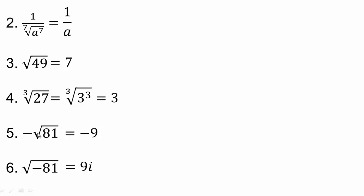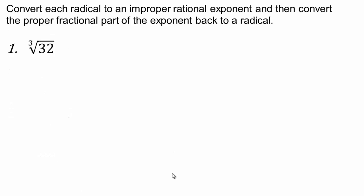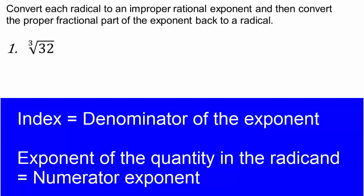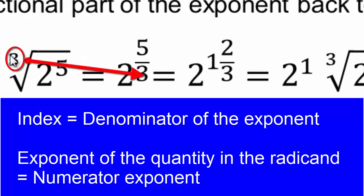So we have a way to simplify roots and cube roots. Remember, if you have a negative inside a root, you're going to end up with an i. Alright, convert each radical to an improper rational exponent, and then convert proper fractional part back to radical. So the first one would look like this. So you have cube root of two to the fifth, or two to the power five thirds.